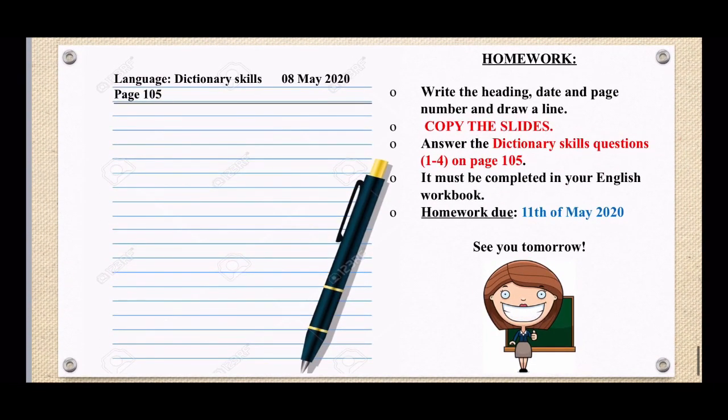So back to homework: you need to write the heading, the date, page number, and draw a line. First things first, copy your slides on guide words and syllables, and then answer your dictionary skill questions one to four on page 105. This must be completed in your English workbook, and the due date is the 11th of May. That's all the homework for today. I hope you learned something new about dictionary skills — enjoy your weekend. I'll see you Monday. Bye!